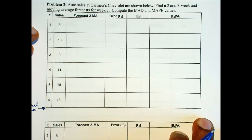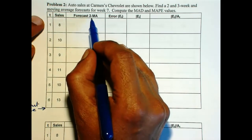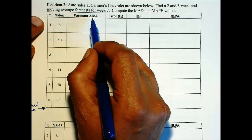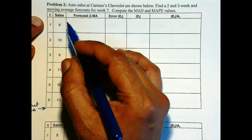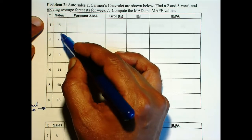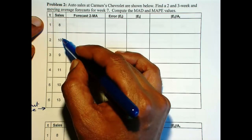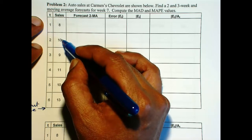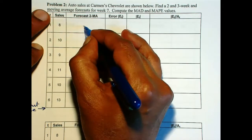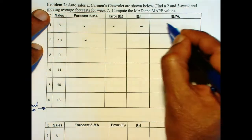Suppose we want to calculate a two-period moving average forecast. You need two full actual values before we can start calculating forecast for the future. So the first two rows will have to be left blank.